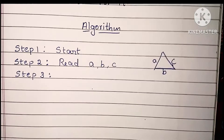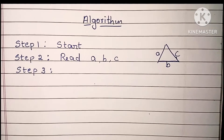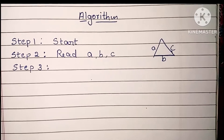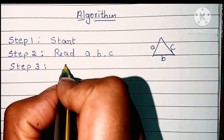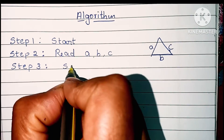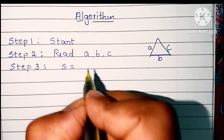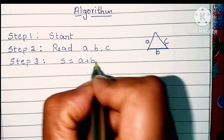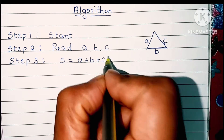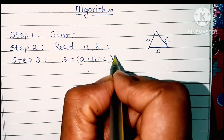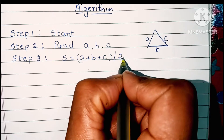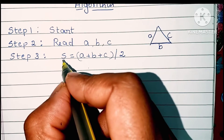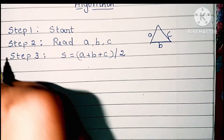In step three we have to start the calculation. To find the area of a triangle, first we have to calculate the semi-perimeter of the triangle using the formula: s is equal to a plus b plus c divided by two. This is the formula to find the semi-perimeter of the triangle.